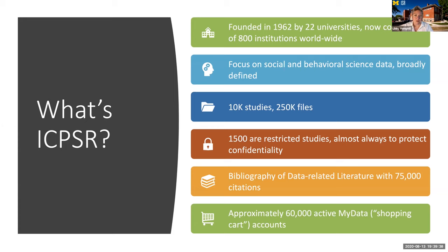One of my favorite features of ICPSR — something that sets us apart from our peers — is the bibliography of data-related literature. When you visit studies at ICPSR or search our website, you can find papers and other publications that leverage the data in our collections. These are especially useful for understanding how to use the data for new research questions, for teaching, and for finding data. We have about 60,000 active users, though that number goes up every summer as more people become familiar with our resources.